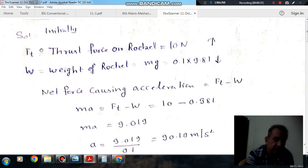So here initially the thrust Ft on the rocket is 10 N and weight of the rocket is mg, that is 0.1 × 9.81, so mg = 0.981 N. The net force causing acceleration: thrust is acting in upward direction and weight is acting in downward direction.